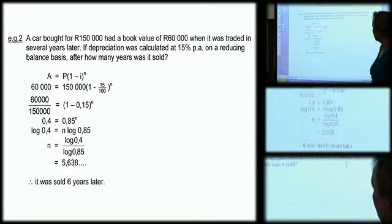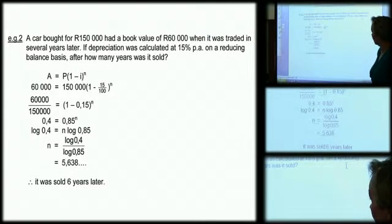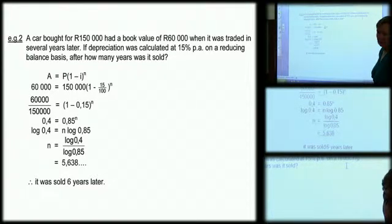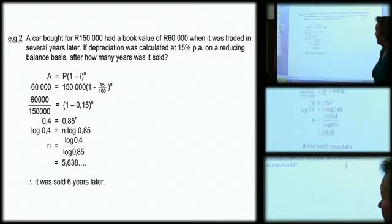Then you got another one on depreciation. It was bought, it had a book value that was traded in several years later. How many years later? What was the time? If it was bought for 150,000 and end up being 60,000, how long did it take for that to happen?